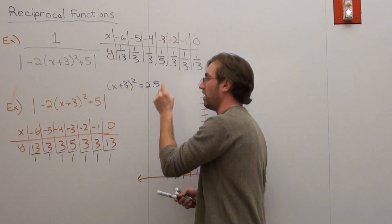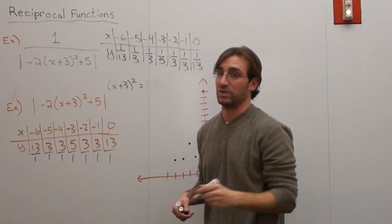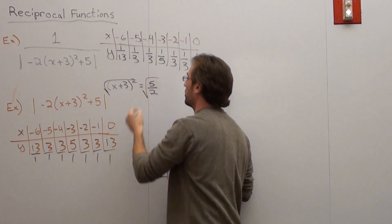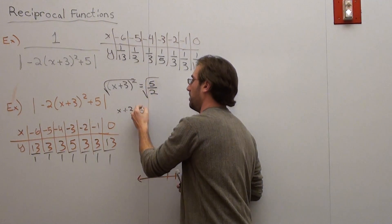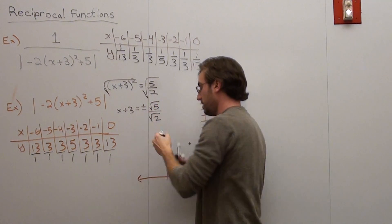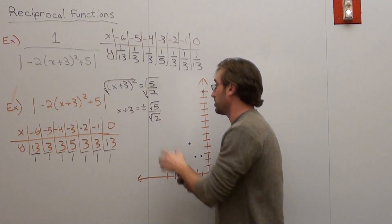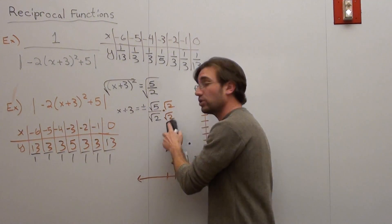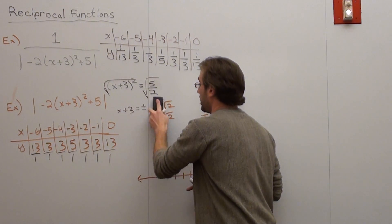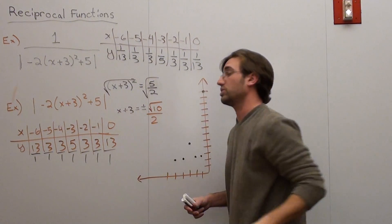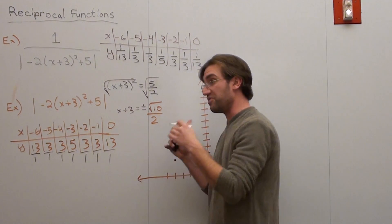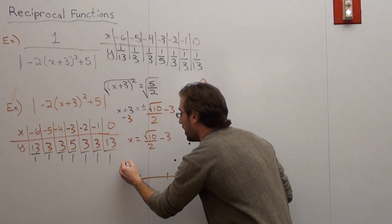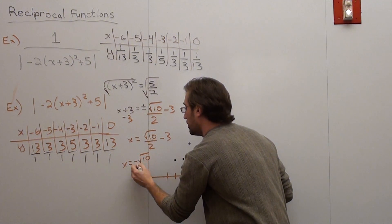I need to figure out where (x+3)² equals 2.5, which is the same as 5/2. Taking the square root of both sides: x + 3 = ± √(5/2). To rationalize, multiply top and bottom by √2: √5 times √2 is √10, and √2 times √2 is 2, so x + 3 = ± √10/2. Subtracting 3: x = √10/2 − 3 or x = −√10/2 − 3. This is definitely not a beginner algebra step — it's a very difficult problem.